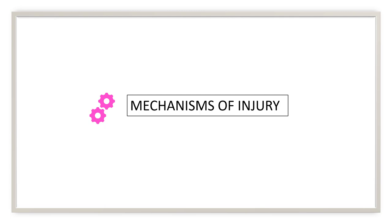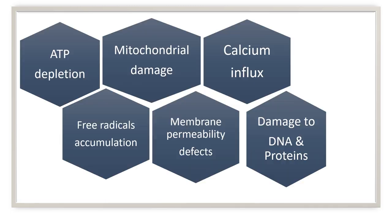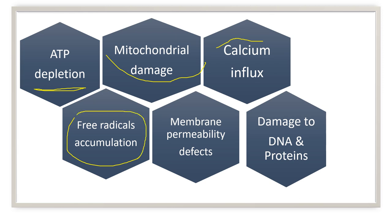Now we will go to the mechanisms of cell injury. The major mechanisms are: ATP depletion, mitochondrial damage, calcium influx into the cell, free radical accumulation, membrane permeability defects, and damage to DNA and proteins. Today we will discuss all five except free radical accumulation, which is a major topic by itself and will be discussed in the next episode. Let's start with the first mechanism — ATP depletion.